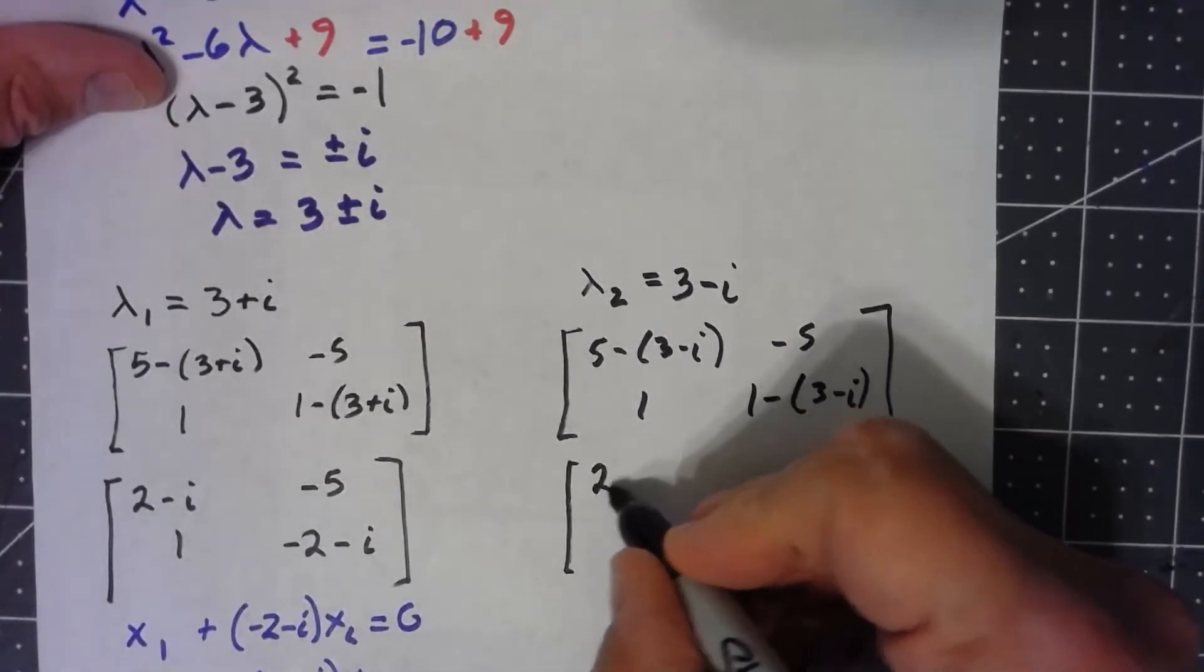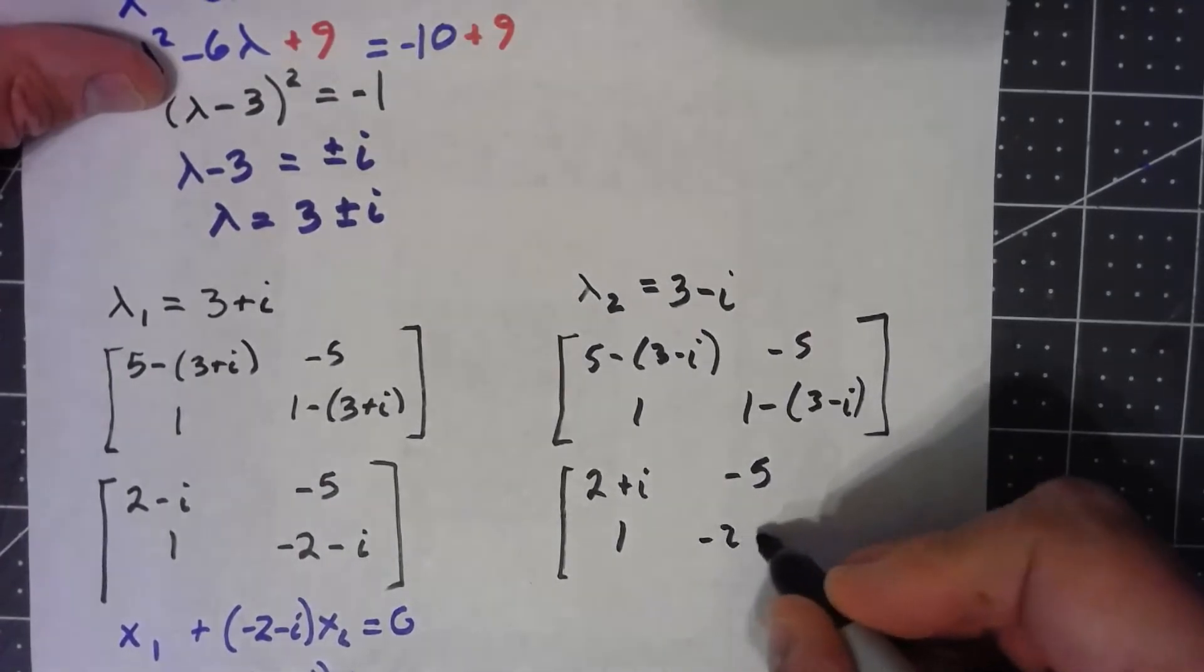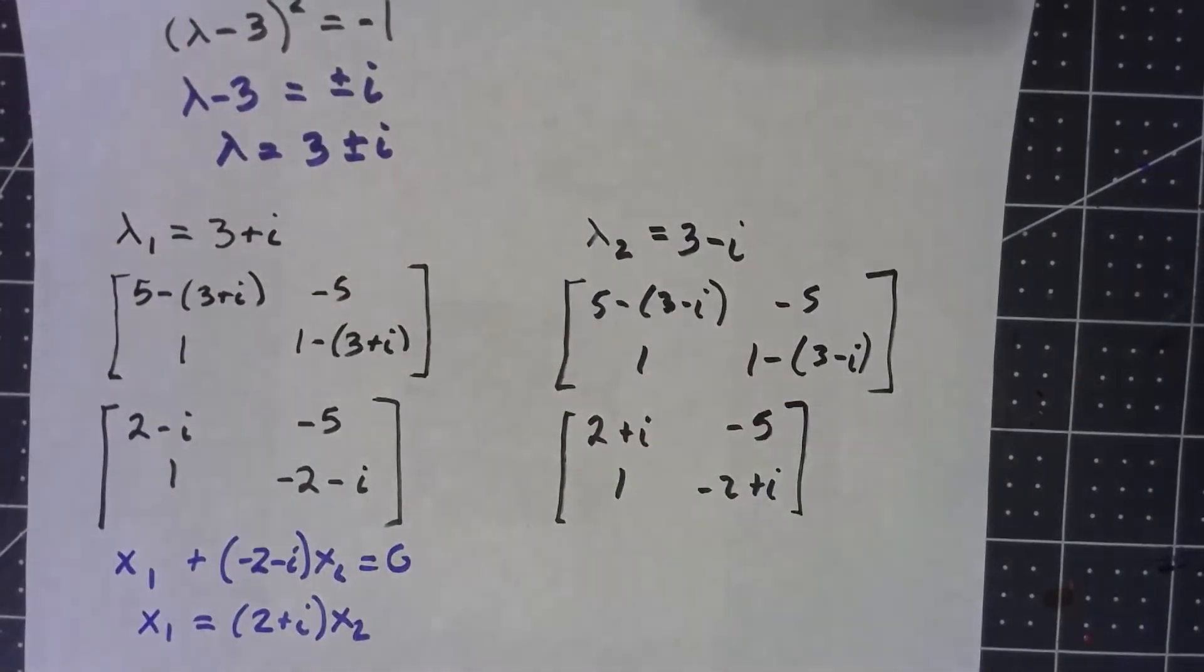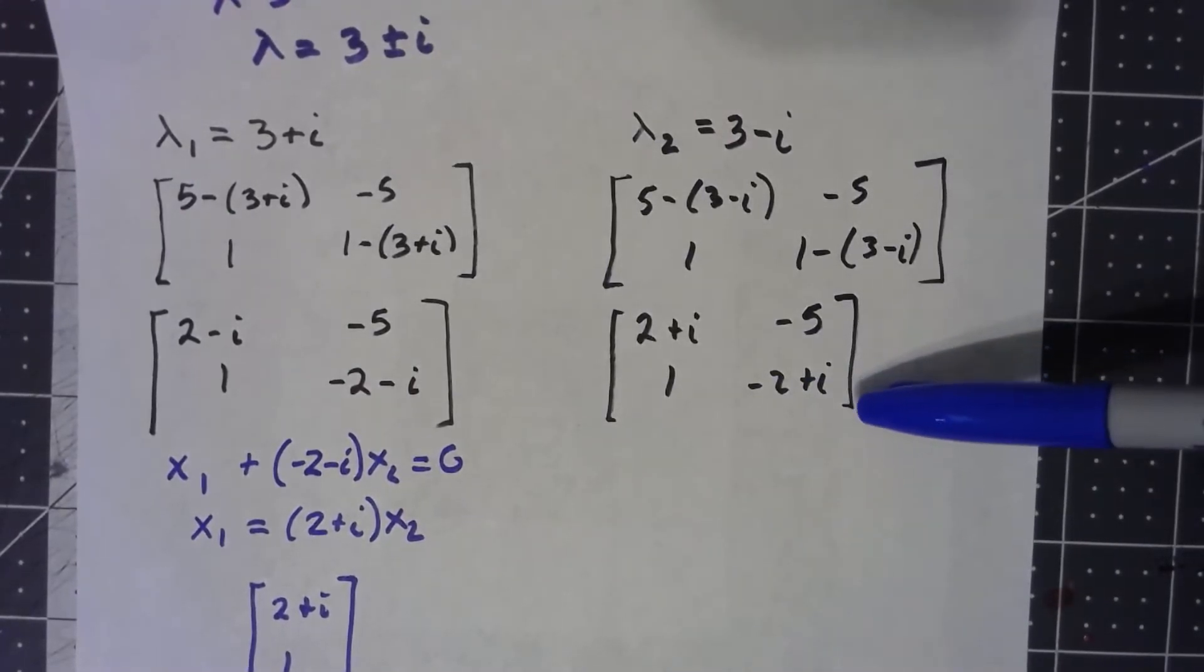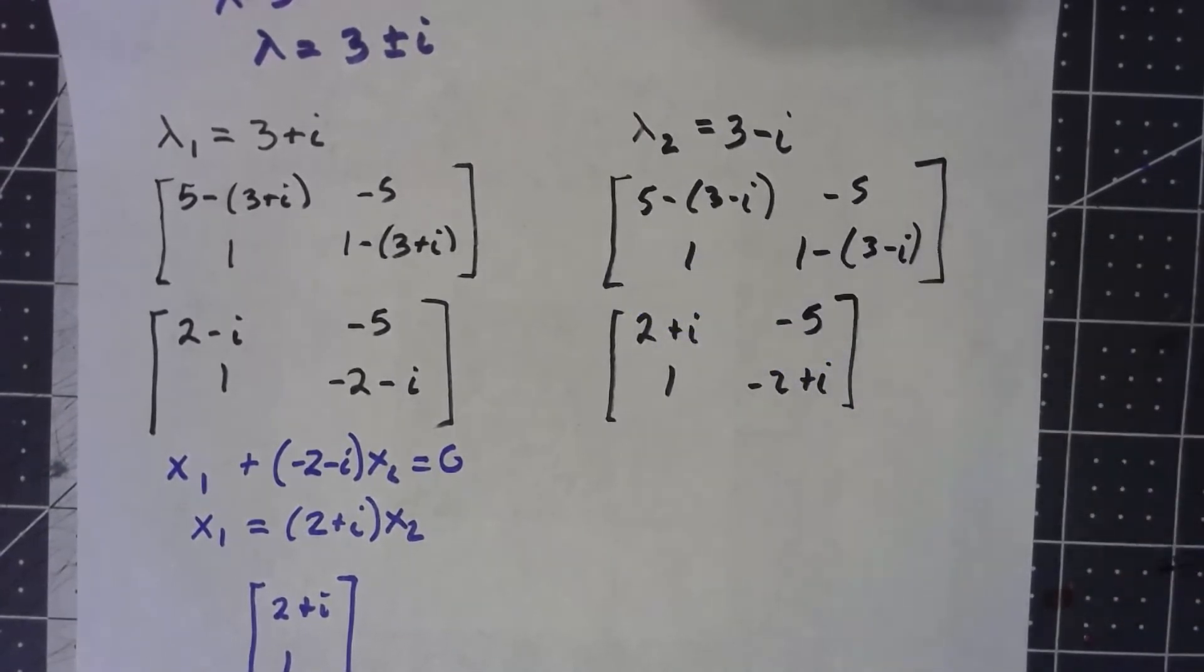Will give me a 2 plus i, a negative 5, a 1, and a negative 2 plus i. And it's the same kind of thing. The complex numbers make it look more confusing, but if I multiply this second row by 2 plus i, I get the 2 plus i negative 5 row.